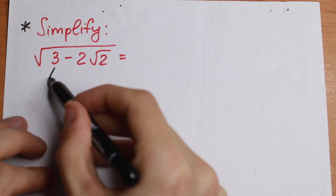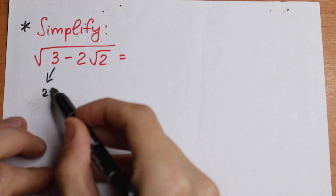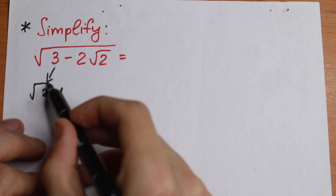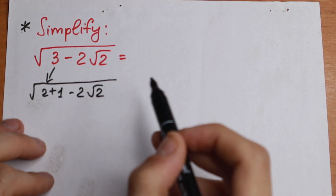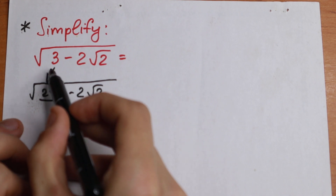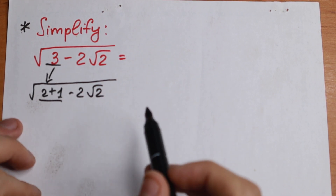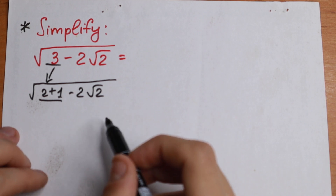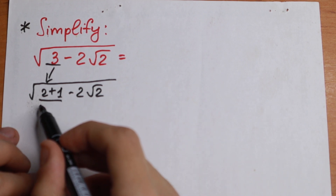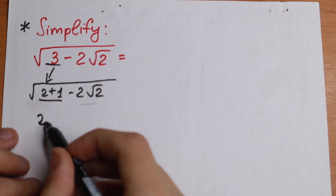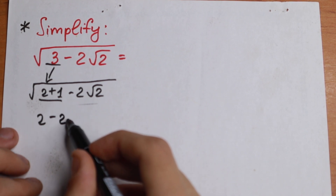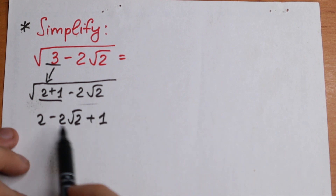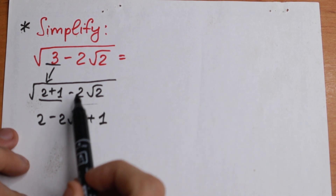First of all, notice that 3 can be written as 2 plus 1. So I rewrite 3 as 2 plus 1, keeping the minus 2 square root of 2 in the main square root. Then I reorder the terms slightly: 2 minus 2 square root of 2, plus 1. Nothing has changed — I've just rearranged the order, putting the 1 at the end.